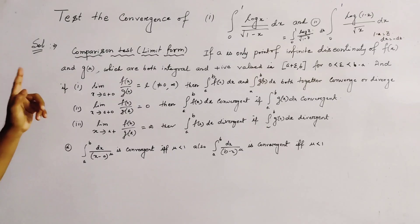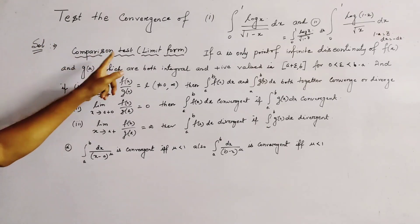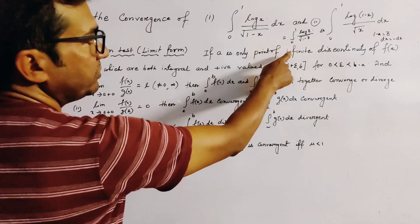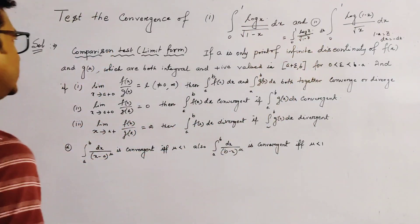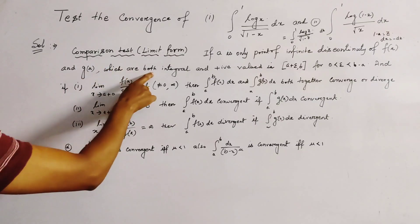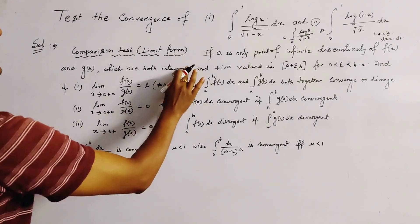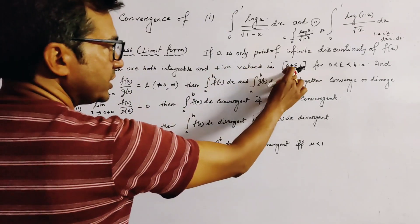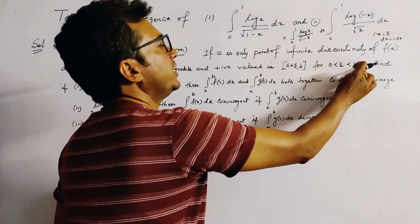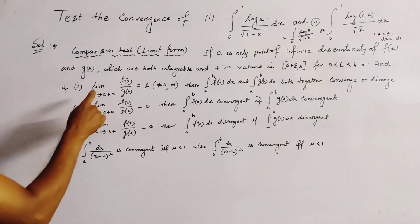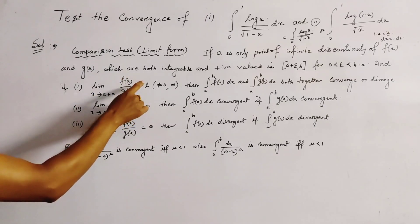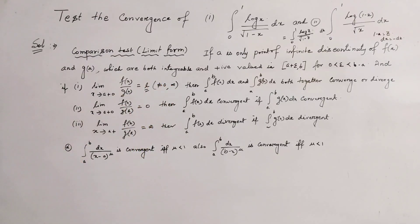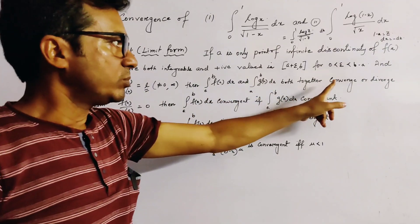The first result is a very important test known as the comparison test of limit form. This says that if a is the only point of finite discontinuity of f(x) and g(x), which are integrable and positive valued in (a + ε, b) for 0 < ε < b − a, and if the limit as x tends to a⁺ of f(x)/g(x) equals L, where L is not 0 and not infinity (i.e., L is finite), then both integrations together converge or diverge.